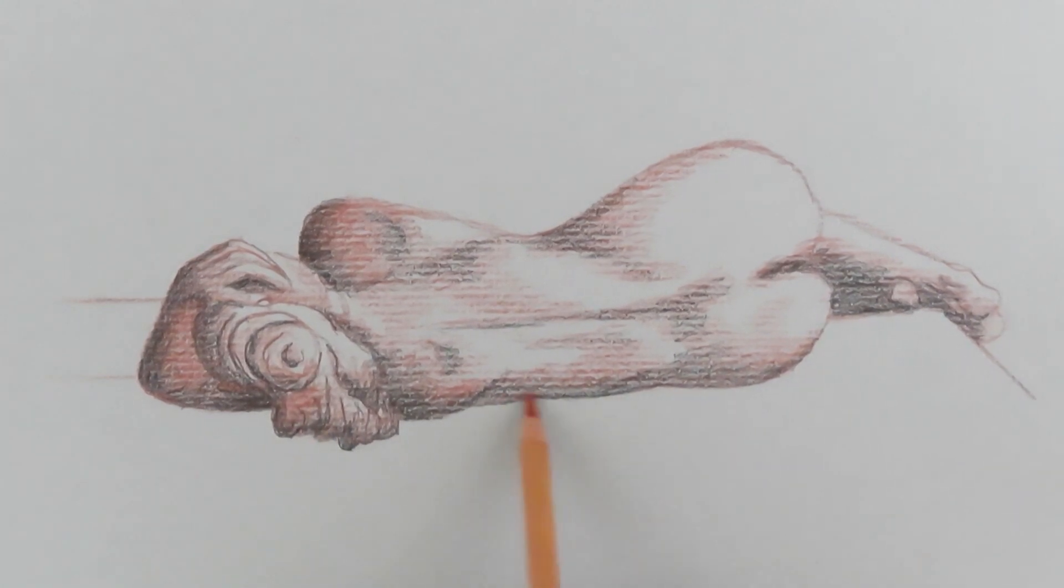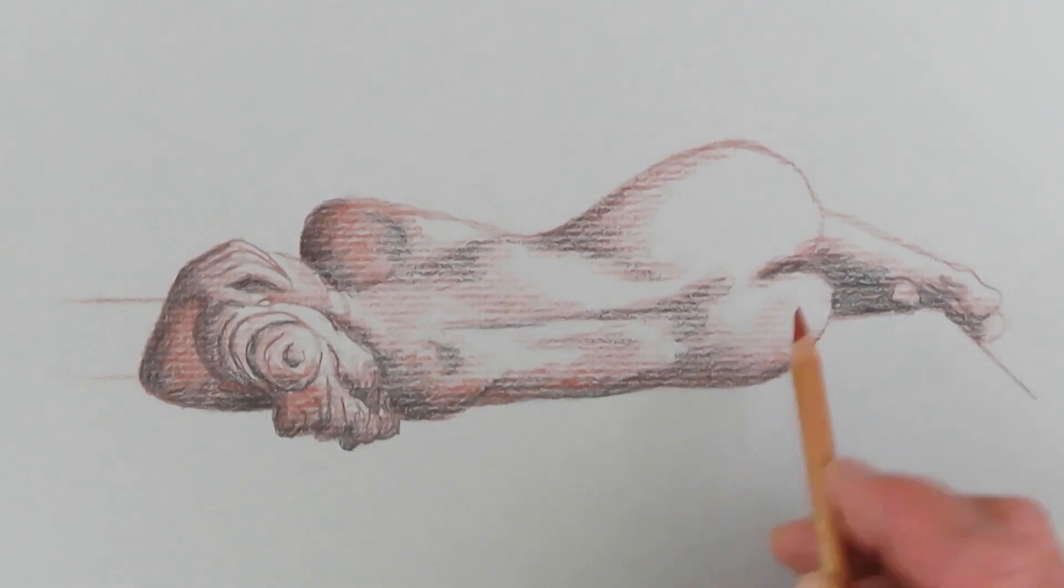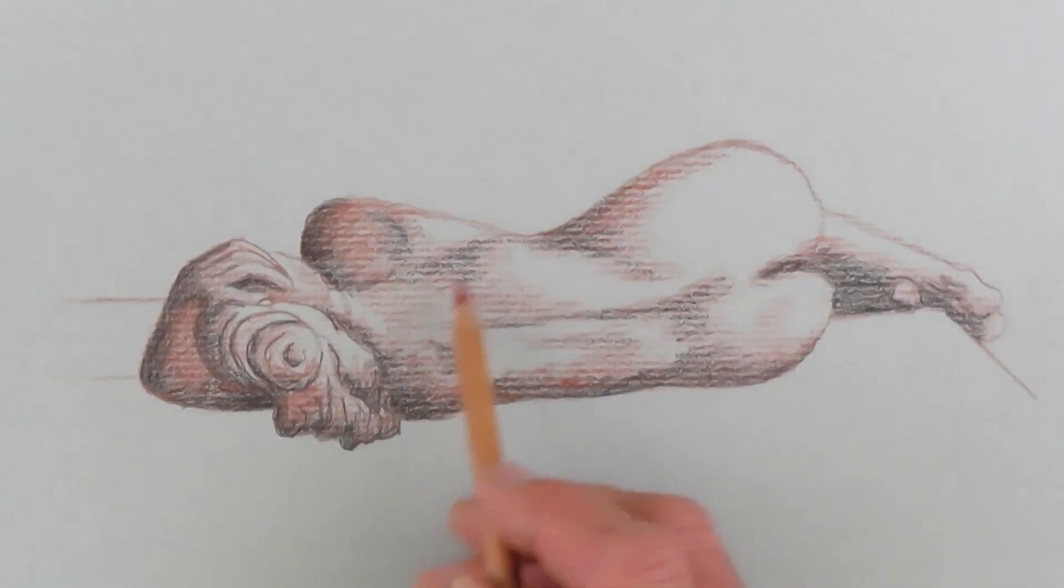Areas that are in deeper shadow, of course, need to be darker, like for instance, the underside of her torso. So I'm going to create some variations in value.